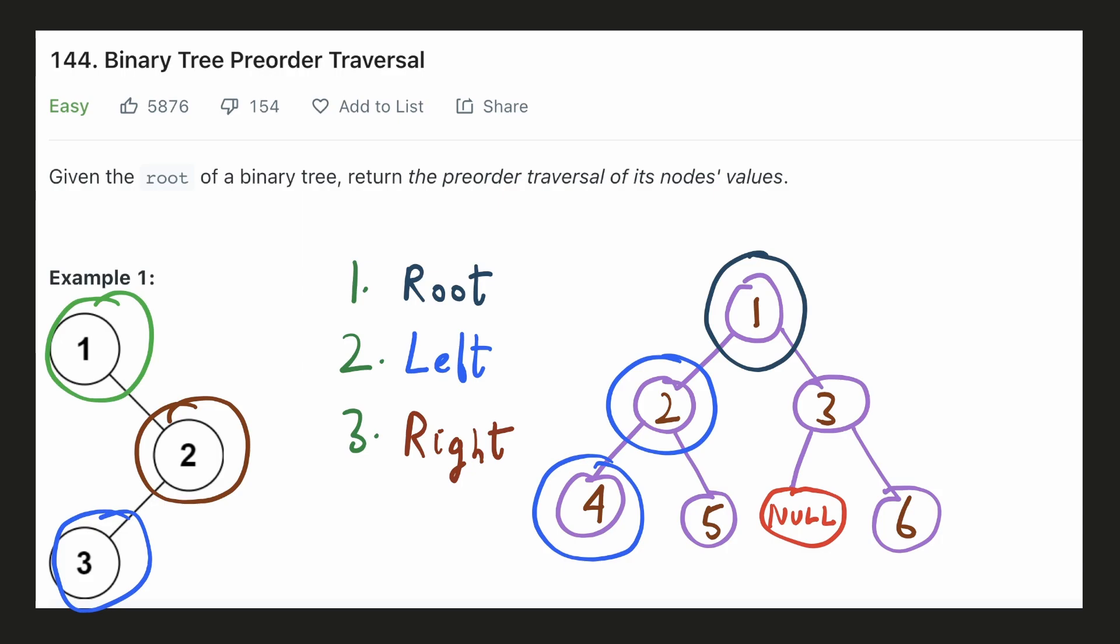Since this node doesn't have any child elements, we'll go back to its parent and try to look for a right subtree. This will be the new root and we'll print its value. Now we cannot go down any further, so we'll go back to its parent too.